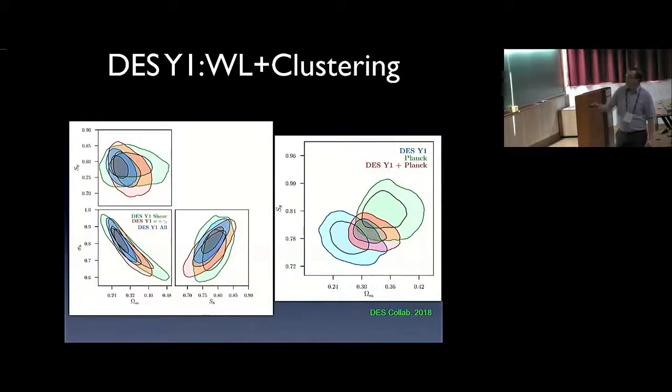In this plane, this would be the Planck constraints. Here is the DES year one constraint using weak lensing and clustering and the cross-correlation. What you notice also is that the size of the Planck contour compared to DES contours are comparable, which is very interesting because it means we're entering the era where the galaxy surveys are starting to give comparable information to the CMB. This is known to be the case in the absence of systematics when these galaxy surveys will cover most of the sky. We're slowly entering it.